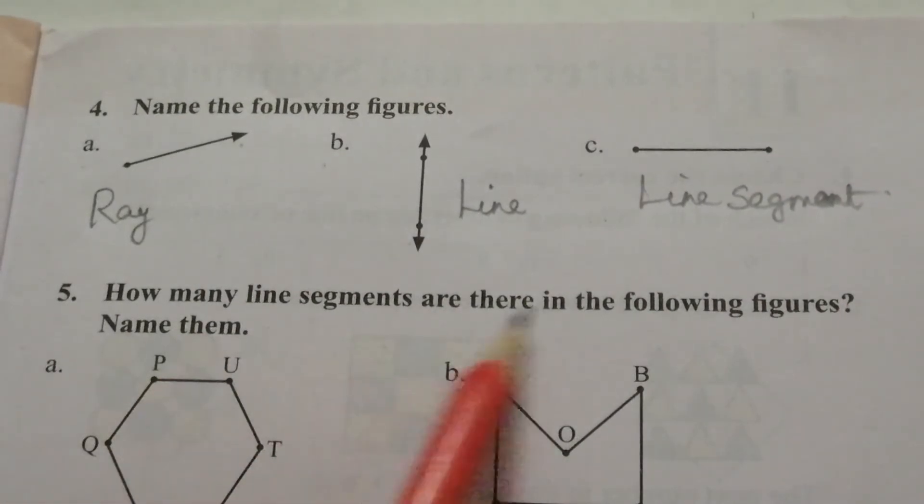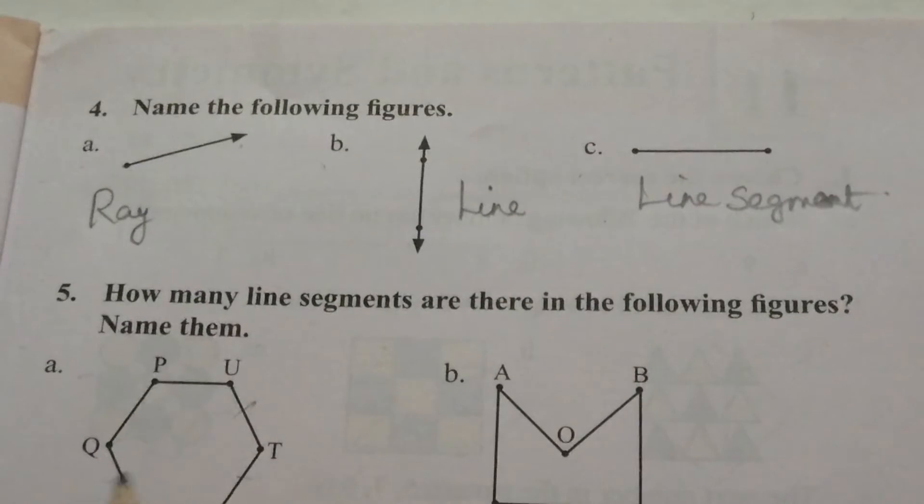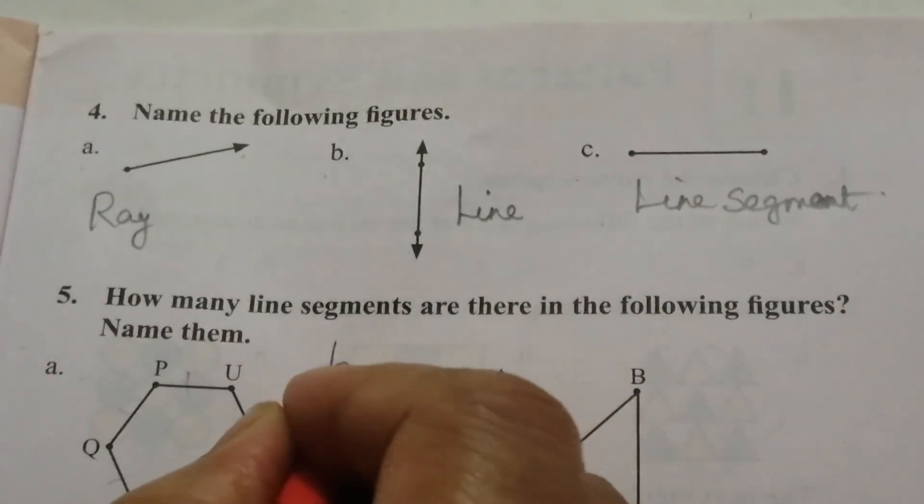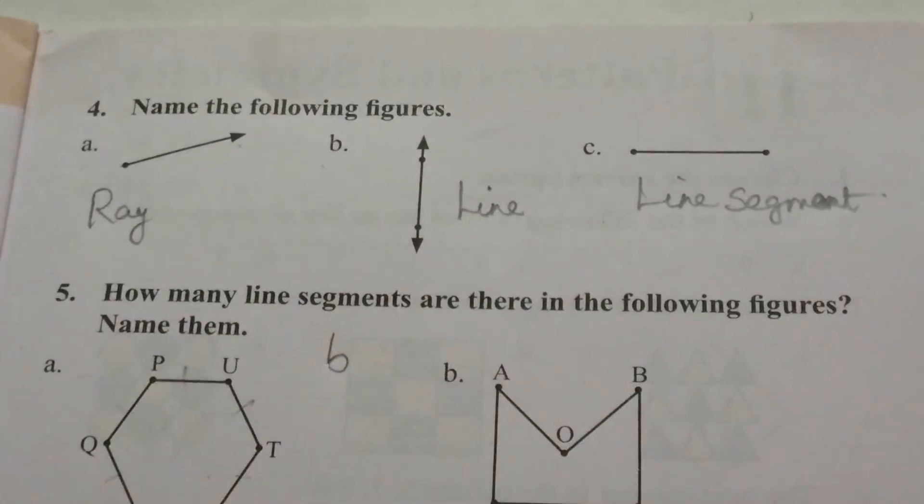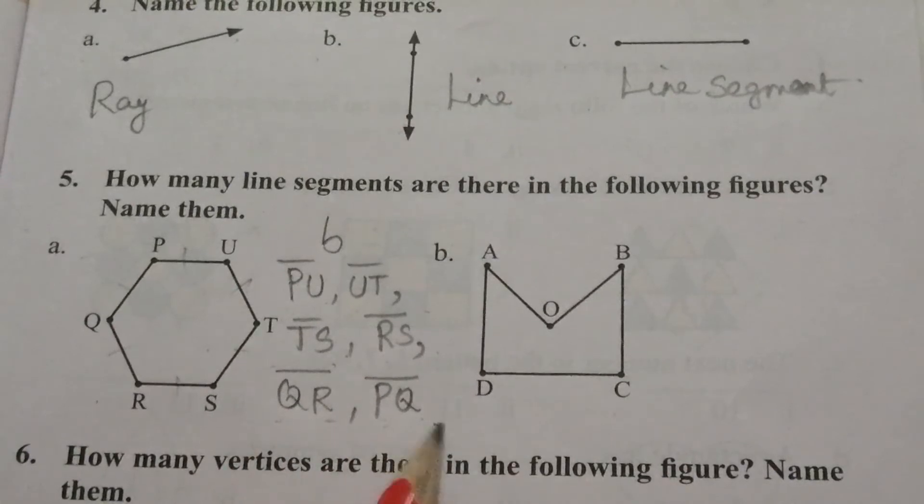5. How many line segments are there in the following figures? Let's name them. How many? 1, 2, 3, 4, 5, 6. So, six line segments are here. The six line segments are PU, UT, TS, RS, QR, and PQ.